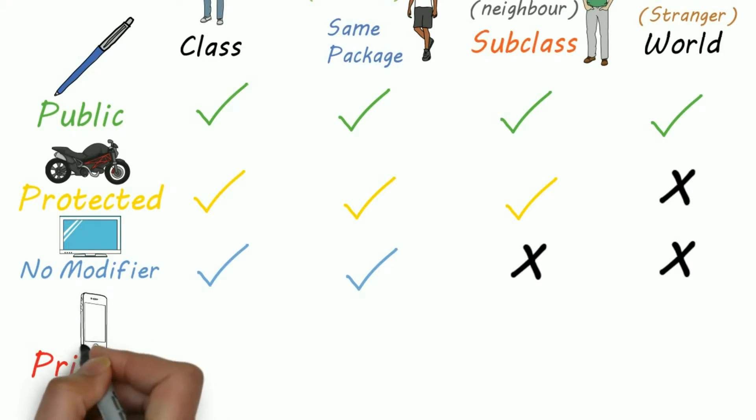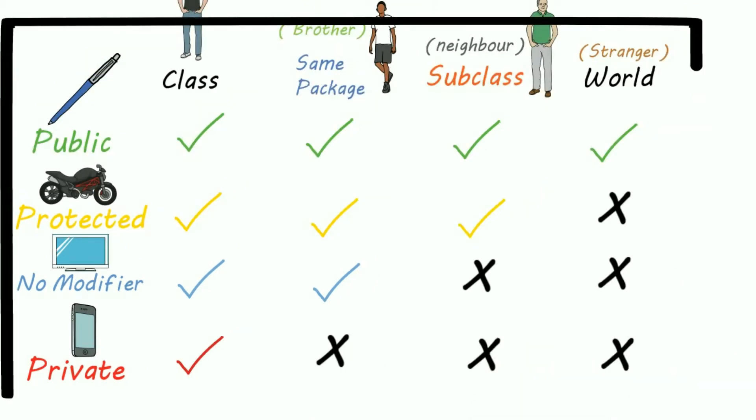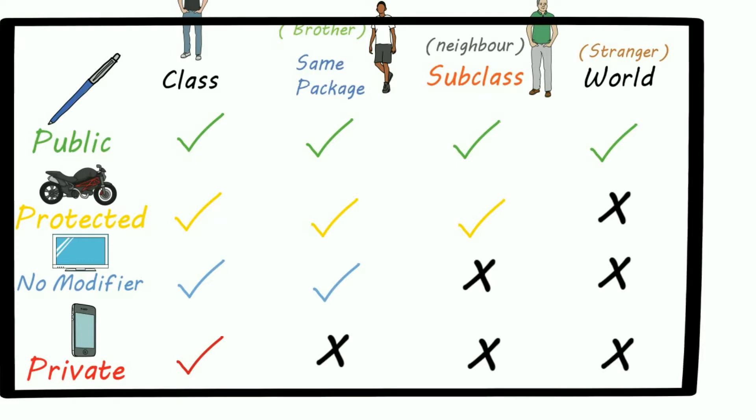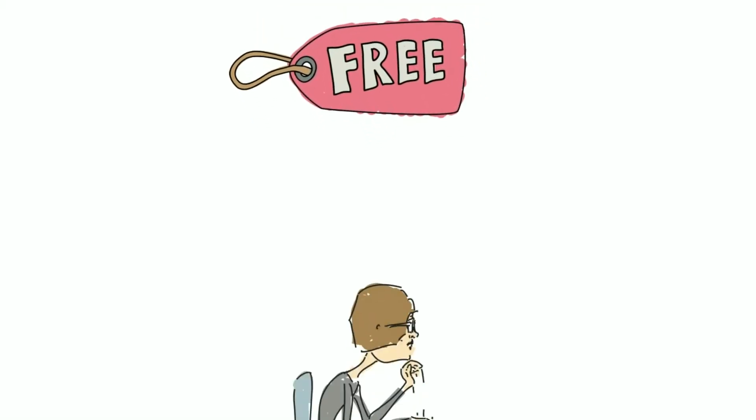Now private. Private means the thing you want to keep to yourself. For example, your smartphone is a private item, so even your brother can't use or, I can say, access your smartphone.